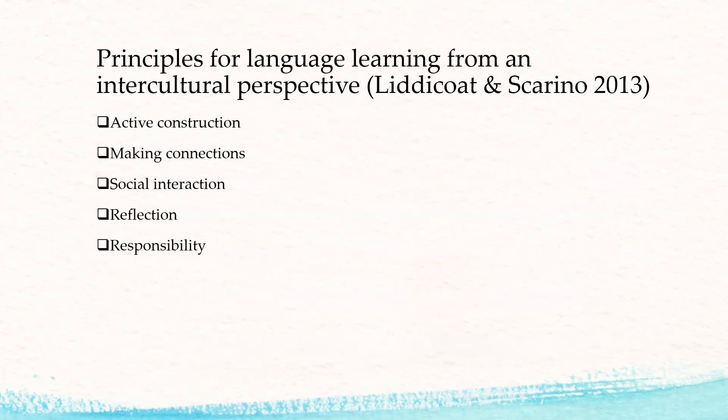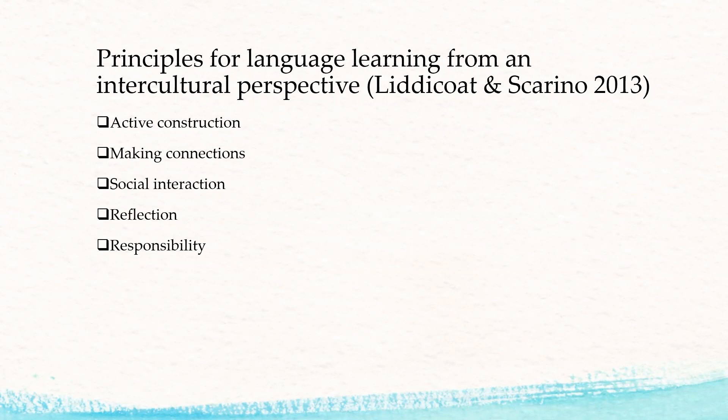Anthony Liddicoat and Angela Scarino proposed five principles for learning languages within an intercultural perspective. First, through active construction, learners come to understand that the language learning process acknowledges how language and culture relate to each other. Through continuous reflection, learners develop the ability to monitor and evaluate their learning, along with understanding how language affects cultures and vice versa. Second, learners make connections between what they already know — their own language and culture — and the new language and culture they're learning. Learners identify similarities and differences and relate the old to the new in an attempt to make learning relevant and meaningful. So learning languages is both intracultural and intercultural.